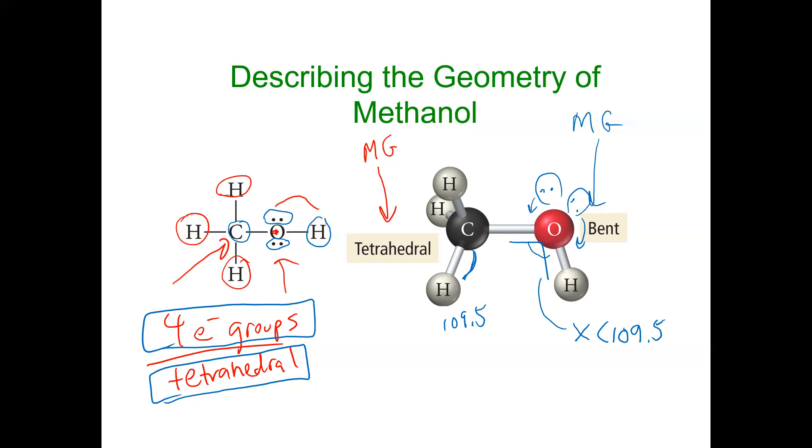So I hope that helps you in understanding that if there are multiple central atoms, I can still determine the molecular geometry for all of the central atoms and their distorted bond angles.